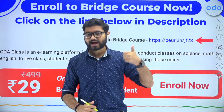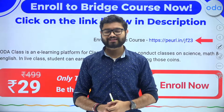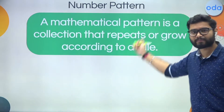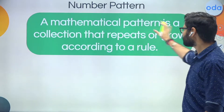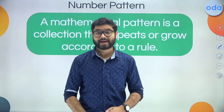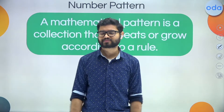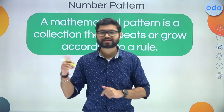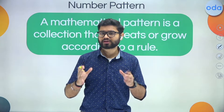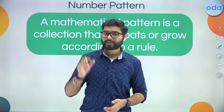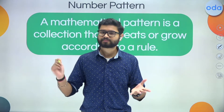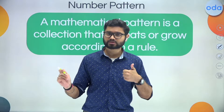So are we good to go now? Let's start the session. Talking about number patterns — a mathematical pattern, or what we call a number pattern, is a collection that repeats or grows according to a rule. It is just a collection of numbers, and those numbers are not random. They follow a particular logic we call a rule. Depending upon the rule, those numbers either keep repeating or they grow as per the rule.